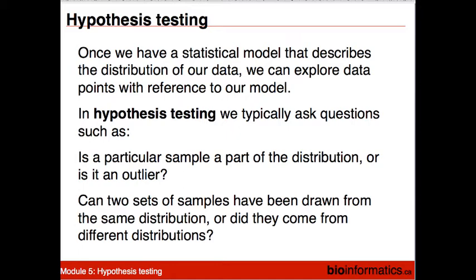If we just calculate a number — say the average distance between the cluster centroids and that number turns out to be 25.7 — that really doesn't tell us anything. We have to have a way of systematically, rigorously comparing the number that we get with a number that we would expect.